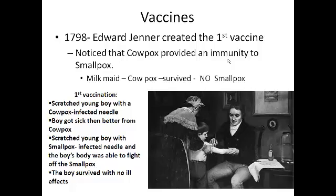Vaccines. 1798 — Edward Jenner created the first vaccine. He noticed that cowpox provided an immunity to smallpox. The milkmaids had cowpox and they survived, but then they never got smallpox. The story of the first vaccine was that he scratched a young boy with a cowpox-infected needle. The young boy got sick with cowpox and then became better. Then he scratched that same young boy with a smallpox-infected needle, and the boy's body was able to fight off the smallpox. The boy survived with no ill effects. He then tried it on himself and then his family, and then inoculated all the people of his town and onward. It was sort of suspect because we aren't sure exactly if he had the permission of the family or not.